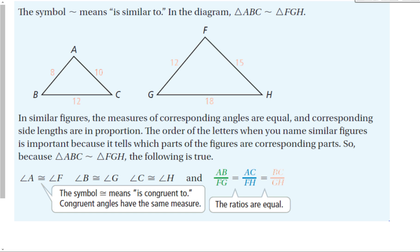In similar figures, the measures of corresponding angles are equal, and corresponding side lengths are in proportion. Angles are equal, but side lengths are not necessarily equal, because obviously A is not equal to 12, right? But they are in proportion.